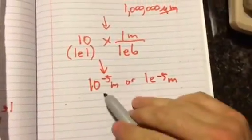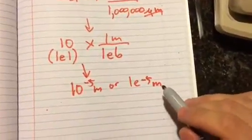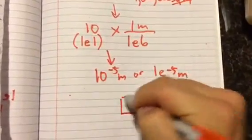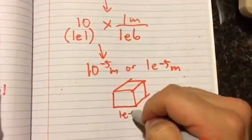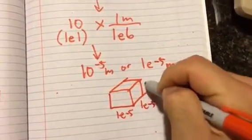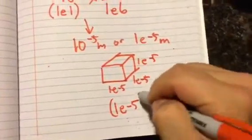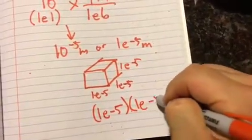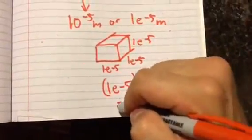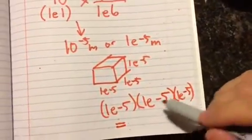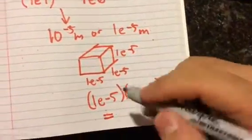And so what you would do then is, now that you've already converted from microns to meters, you're already in the units that you need to calculate your answer for. So some people find this easier because then when you have your cubic cell shape, you can just do 1e-5 meters, 1e-5 meters, and 1e-5. And so that's just 1e-5 times 1e-5 times 1e-5 meters, and you get your final answer when you multiply all those together. Remember, they're exponents of the same base, so we can just add those together. So -5 plus -5 plus -5.